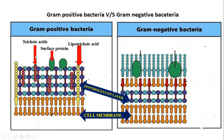Teichoic acid acts as the major surface antigen for gram positive bacteria and is also involved in surface protein interactions. So gram positive bacteria has: a cell membrane, a peptidoglycan layer, cell wall teichoic acid, and lipoteichoic acid (membrane teichoic acid).